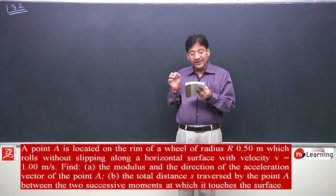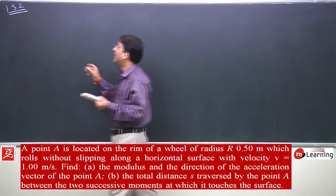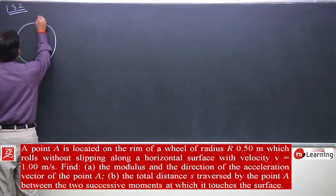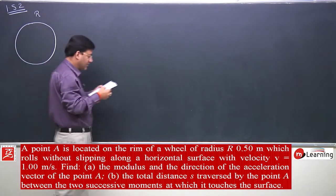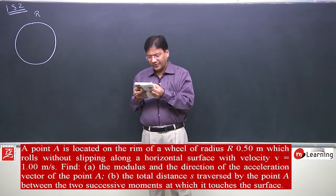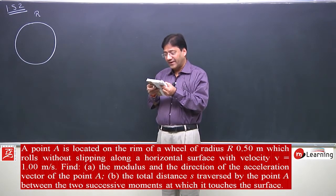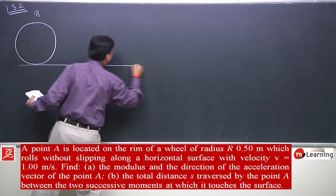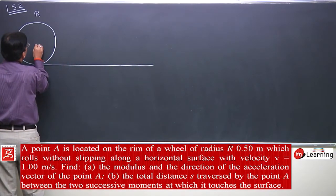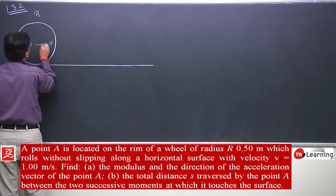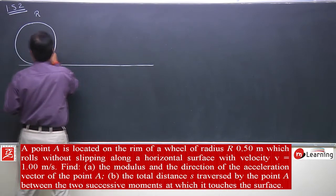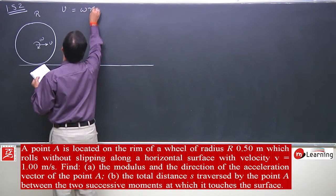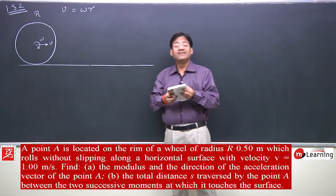Point A is located on the rim of a wheel of radius r. The wheel rolls without slipping along the horizontal surface with some velocity v. It is rotating as well as translating, and v must be equal to omega times r, since it is rolling without slipping.